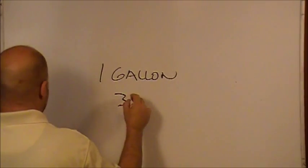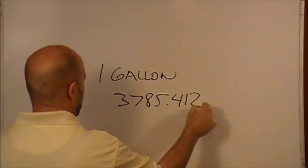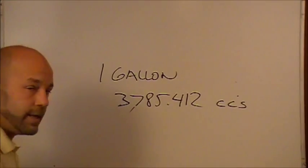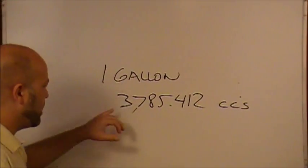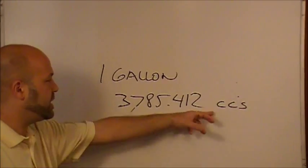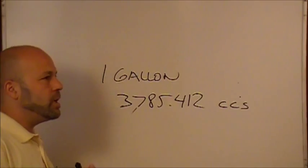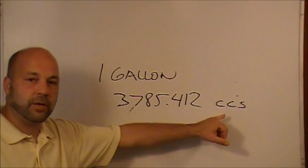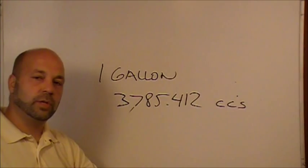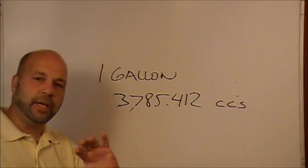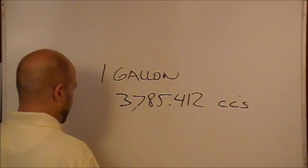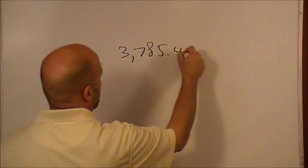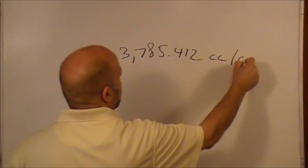It just so happens that there are 3,785.412 cc's in a gallon. That's the conversion I looked up — there are three thousand seven hundred eighty-five point four one two cc's in a gallon. But we're looking for BCM, so I want to calculate how many BCM there are in a gallon. That's why I started with cc, because that's a metric unit I can use compatibly with BCM.